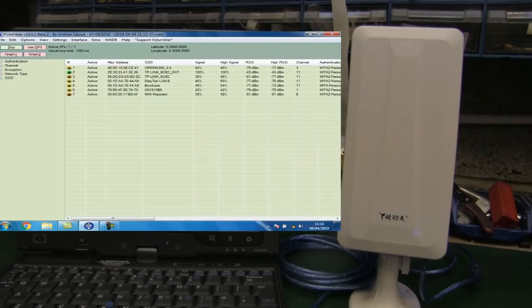So it's picked up seven, eight access points. The green one there is actually here with me in the lab so we can ignore that one. Looking at the signal strengths of some of those access points, it's not looking too good.